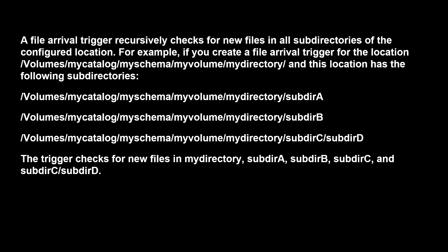Remember that it checks the location recursively. If you have given the location of a folder with multiple sub-folders, the workflow is going to detect a change made to any of those folders. For example, if you have a volume path 'my directory' with sub-directories A, B, and C, even if a change is made to sub-directory D inside sub-directory C, the workflow will still trigger.